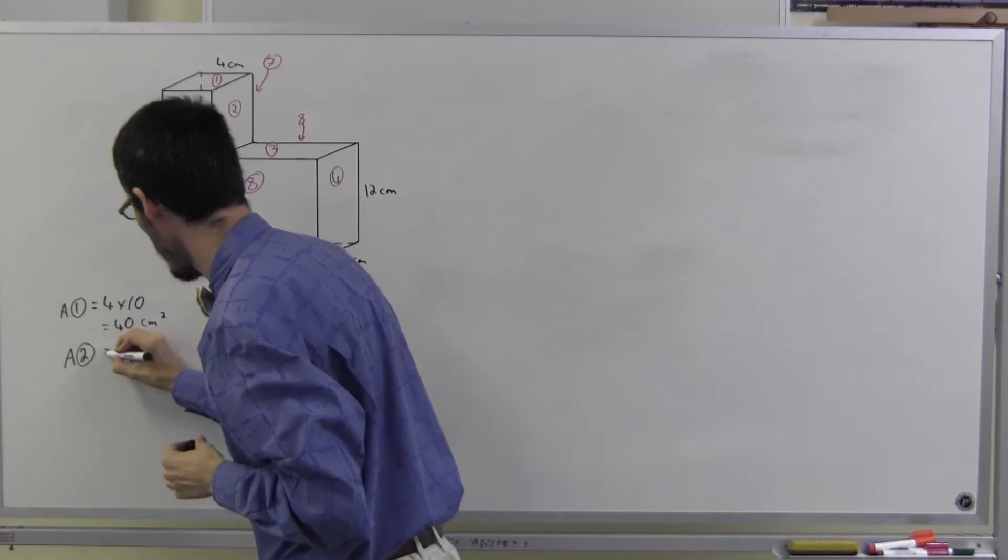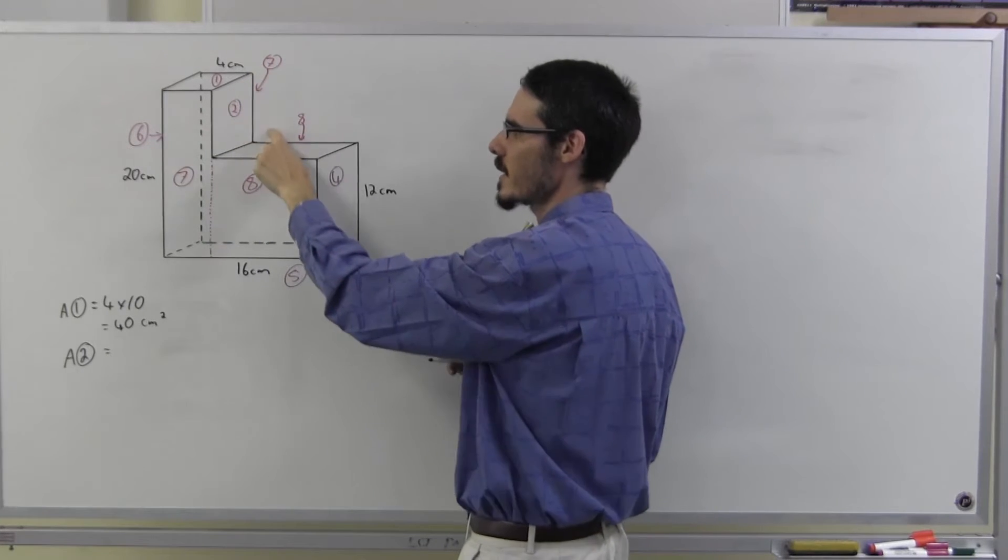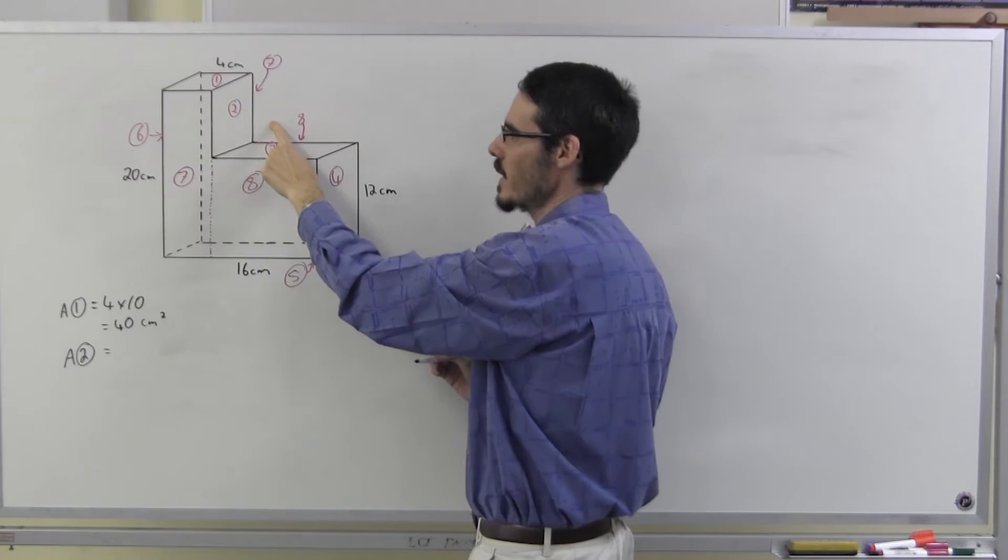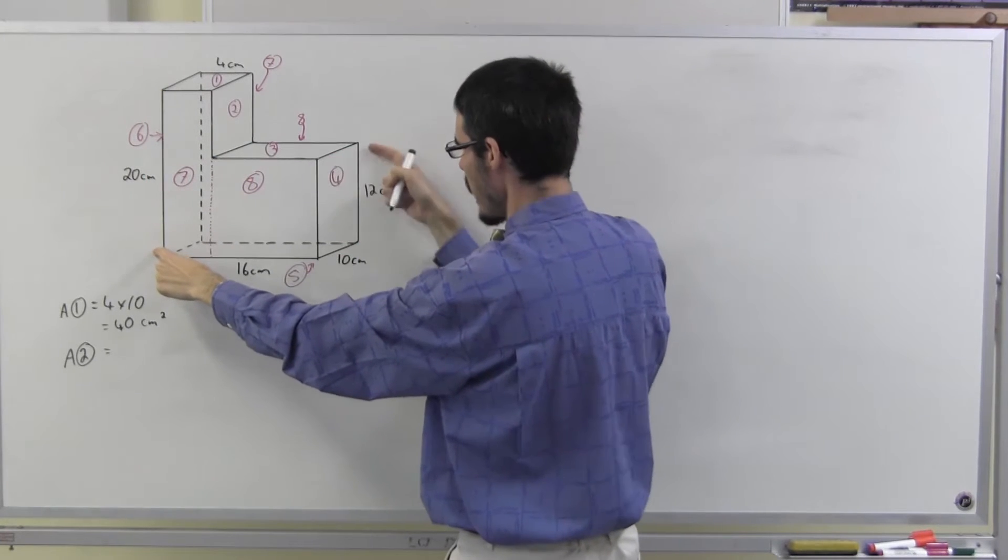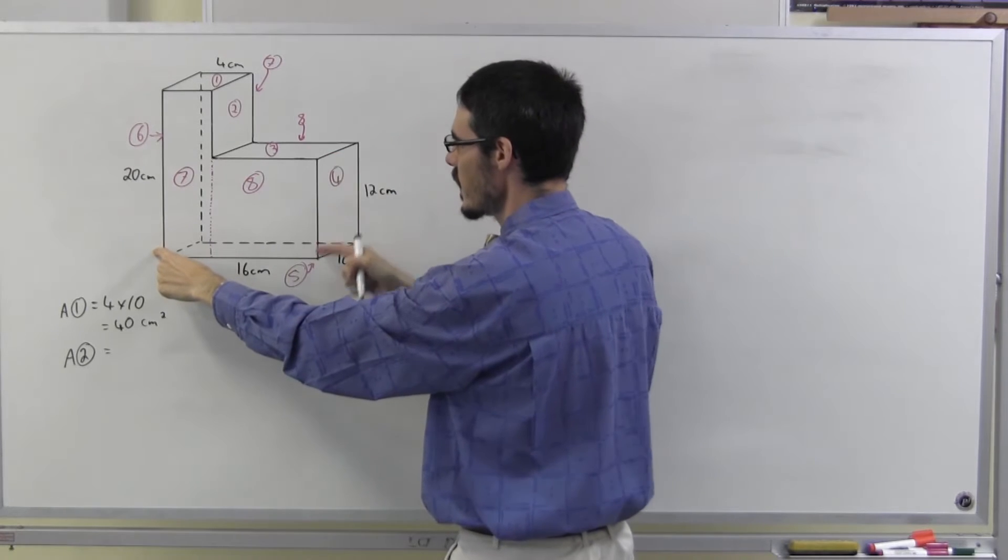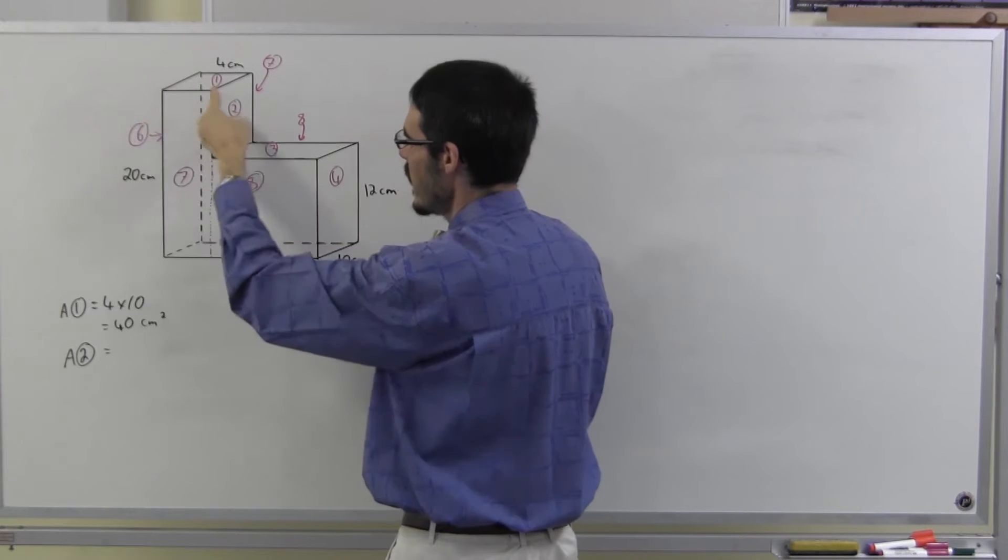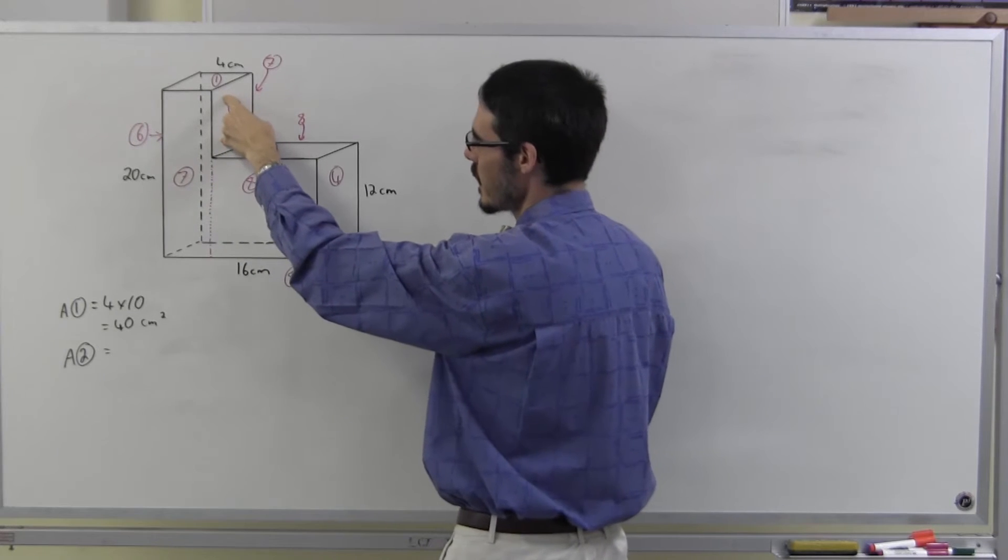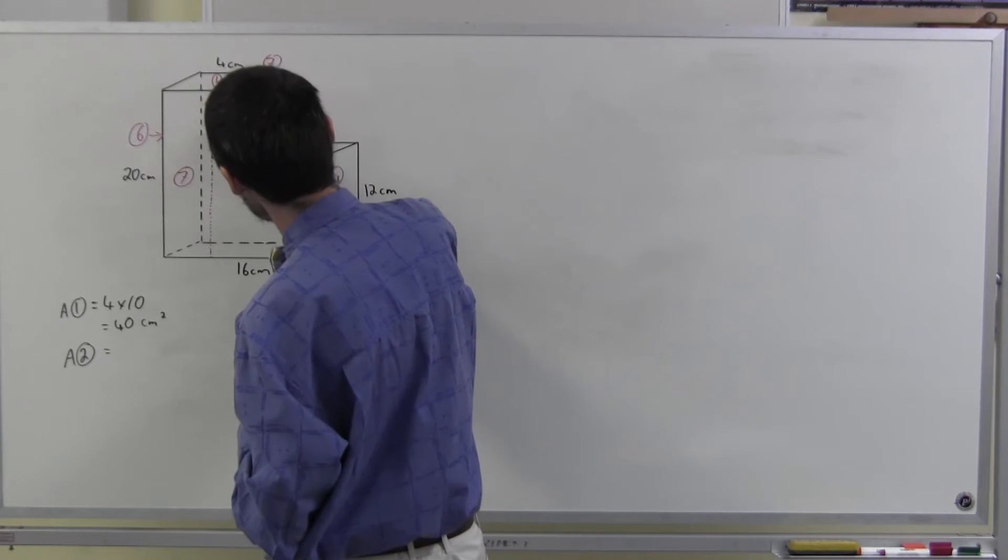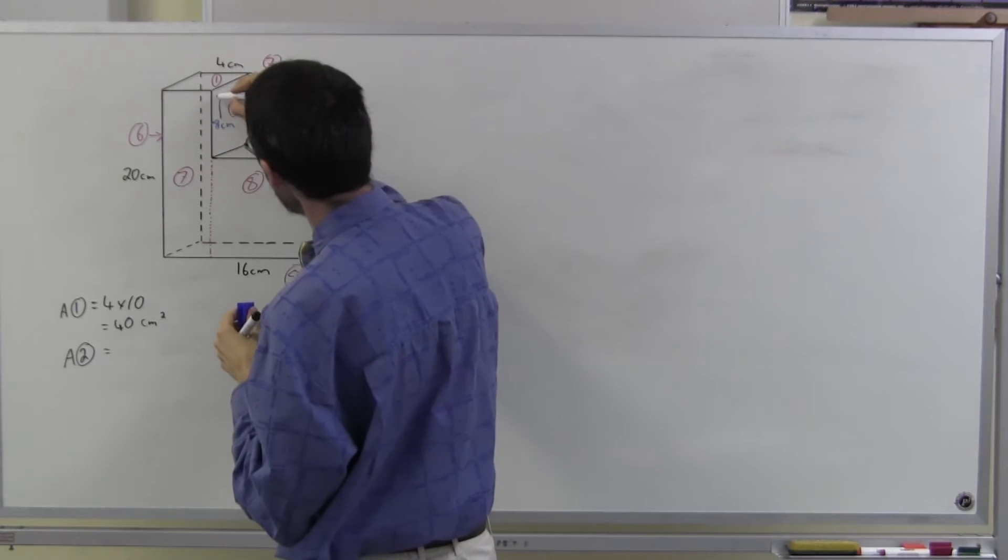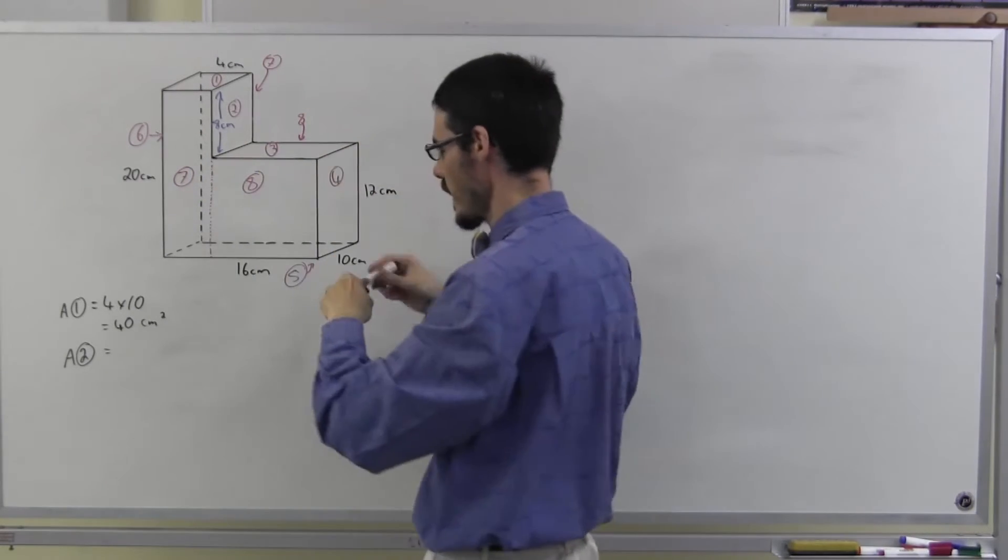Area two. How long is that side going to be? Well, this side is 20. And this length here is, well, this one is 12. So this one's also 12. If that's 20 and that's 12, that leaves eight for there. We need it in another color, just to remind us that this is one we worked out. Eight centimeters. Okay, so this rectangle is eight by ten.